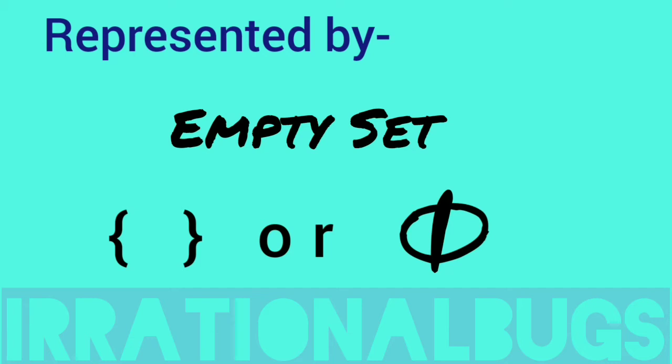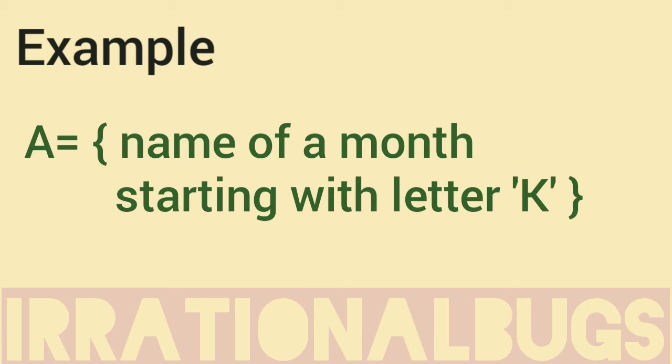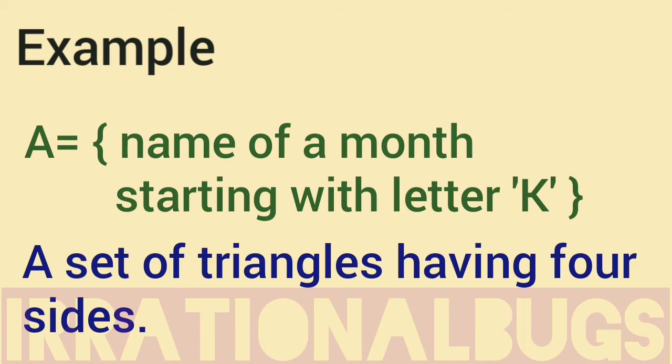For example, set A is equal to name of month starting with letter K. We have to think of a month that starts from K. In our 12 months, there is no month that starts from K. That means, there is no member in this set. Next example, a set of triangles having four sides. Again, there are no four sides in a triangle, so this set will be empty set.